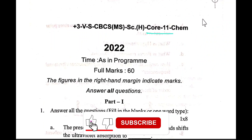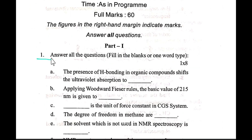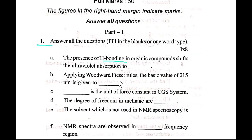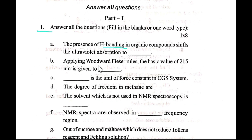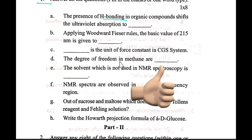Core 11 Chemistry Honors, fifth semester, number one. The presence of hydrogen bonding in an organic compound shifts the ultraviolet absorption. Applying Woodward's rule, the basic value of 215 nanometers is given. What is the unit of force constant in the CGS system?